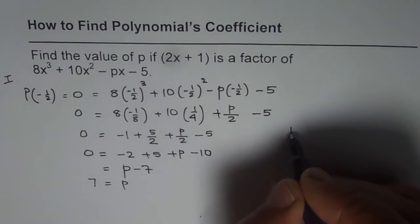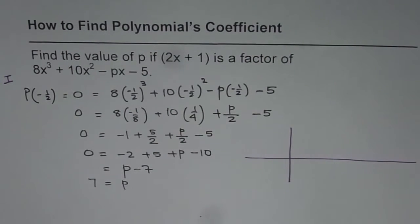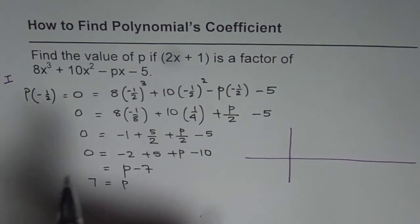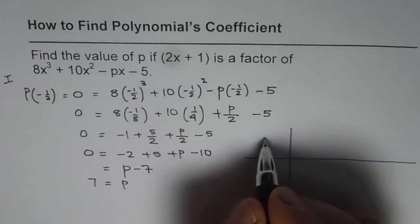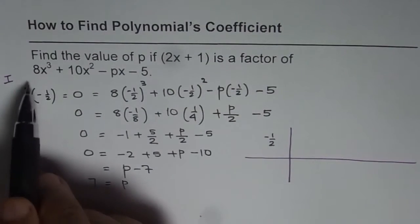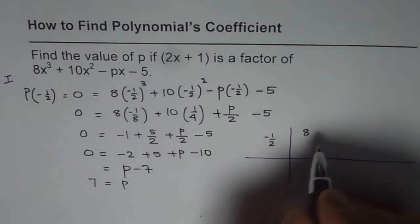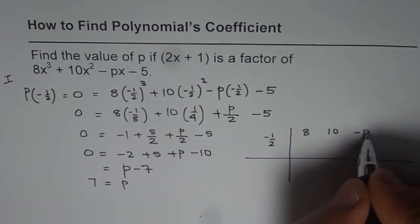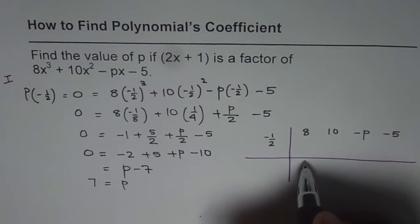So I'll do it right here. So we'll do synthetic division. We are going to divide the polynomial 8x cube plus 10x square minus px minus 5 by 2x plus 1. So we have to write here minus half. And these coefficients are 8 plus 10 minus p and minus 5.